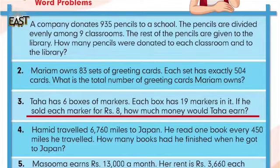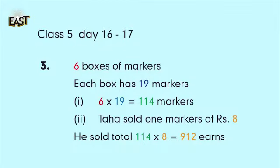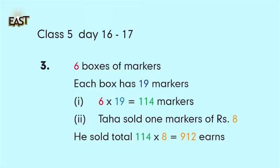So we solve it: 6 boxes multiplied by 19 gives us 114 markers. Now we move to the second part. The first part answer is 114 markers. For the second part, he sold each marker for 8 rupees, so we simply multiply 8 by 114. That means we are finding the total rupees earned. 8 multiplied by 114 gives us 912 rupees. So Taha's total earning from those markers is 912 rupees.